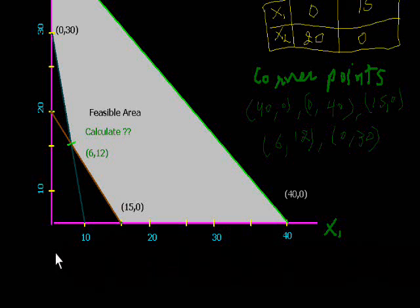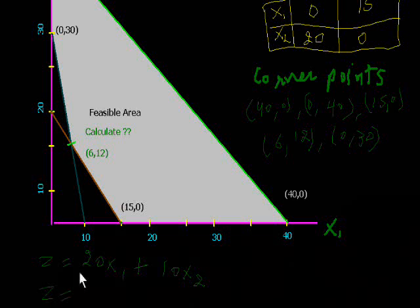Now we calculate Z = 20X1 + 10X2 for each corner point. For example, at point (6, 12): Z = 20(6) + 10(12) = 240. You will have to put all corner point values into this equation and calculate. You will see that Z will be minimized at 240.